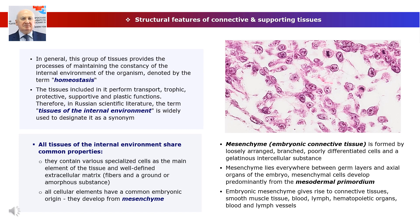In general, this group of tissues provides the processes of maintaining the constancy of the internal environment of the organism, denoted by the term homeostasis. The tissues included in it perform transport, trophic, protective, supportive, and plastic functions. Therefore, in Russian scientific literature, the term 'tissues of the internal environment' is widely used. All tissues of the internal environment share common properties: firstly, they contain various specialized cells as the main element, and a well-defined extracellular matrix with different chemical composition and structure depending on the tissue type.